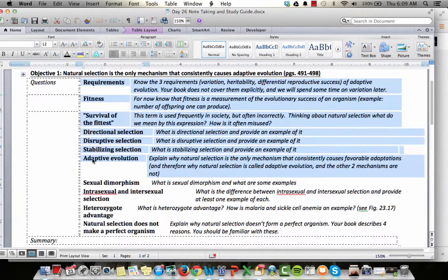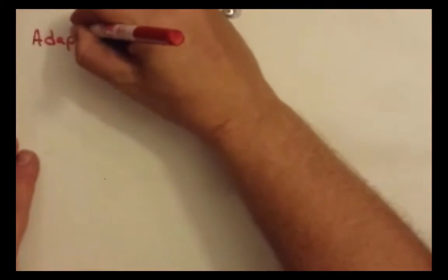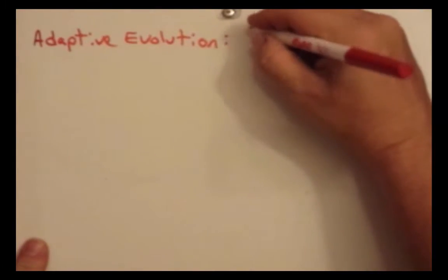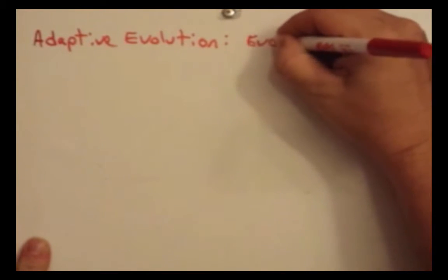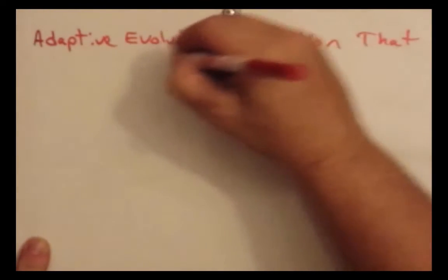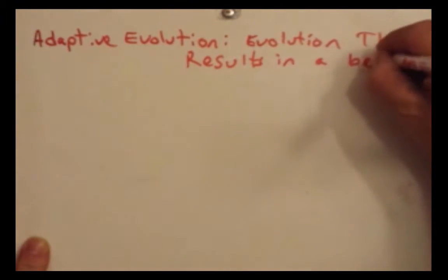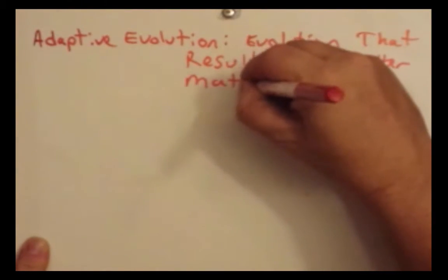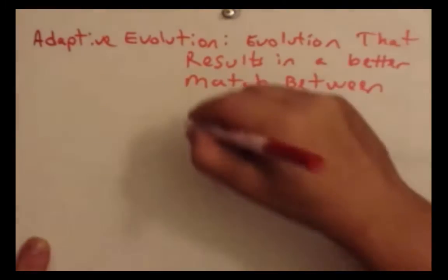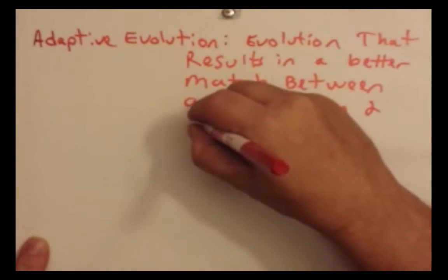Let's get started with objective one. Let's write down adaptive evolution first. In general, what this means is evolution that results in a better match between an organism and their environment.